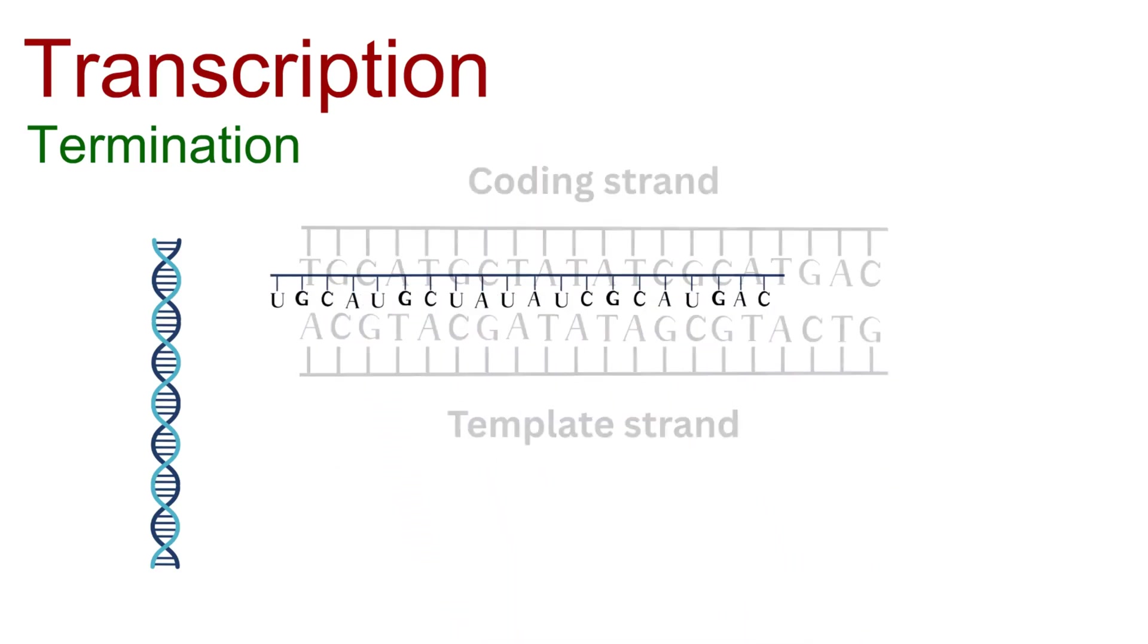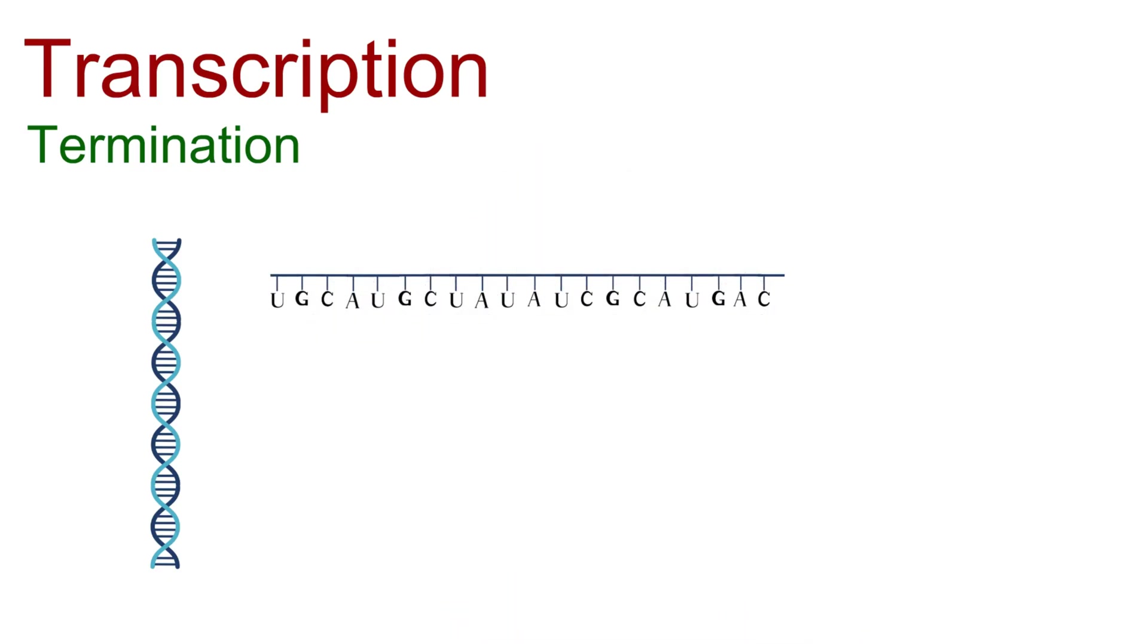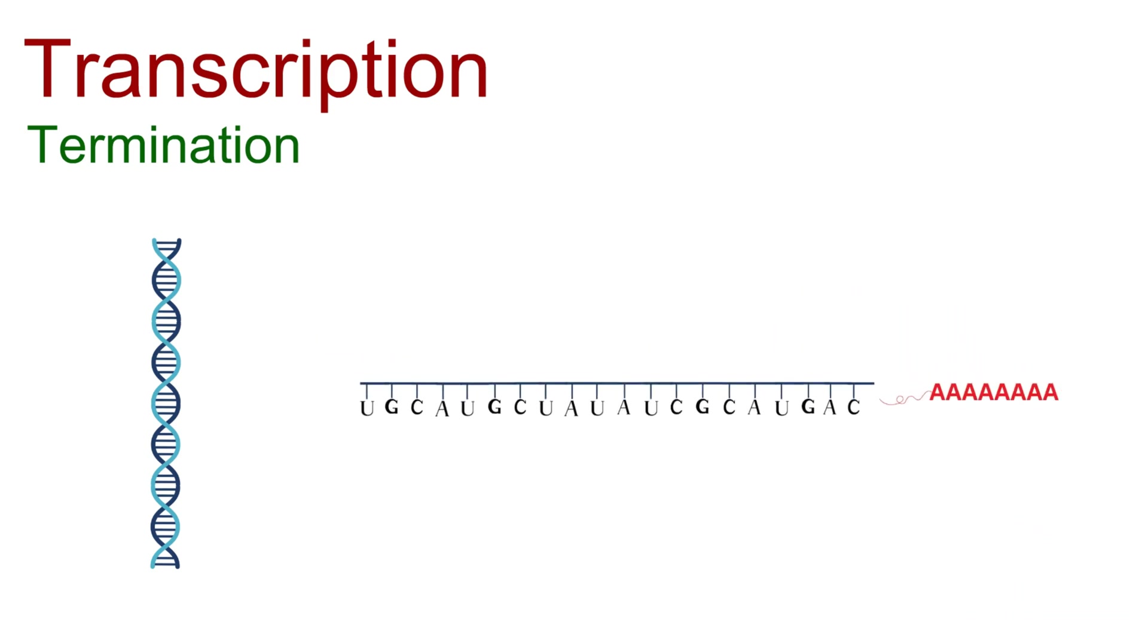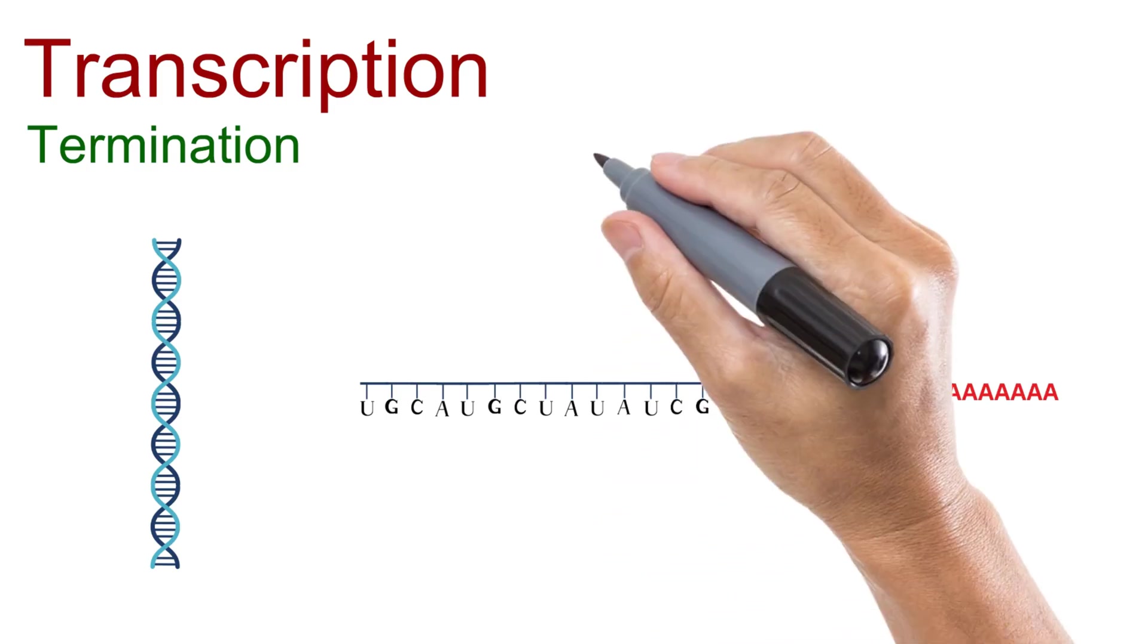Now comes the finishing touch. An enzyme called poly-A polymerase adds a long tail made of adenine bases, about 100 to 250 of them. This poly-A tail protects the RNA, helps it leave the nucleus, and prepares it for translation. The result is a brand new pre-mRNA, essentially the first draft of the gene. But before it can be used, this draft needs editing.